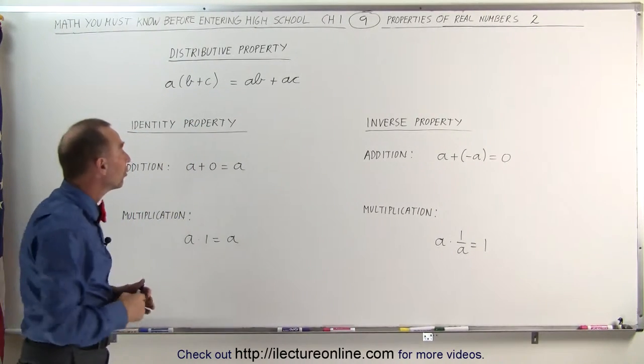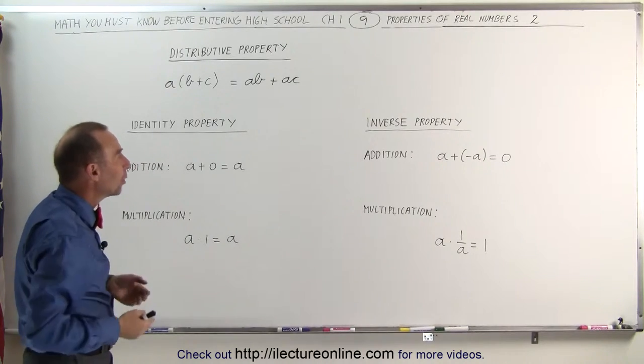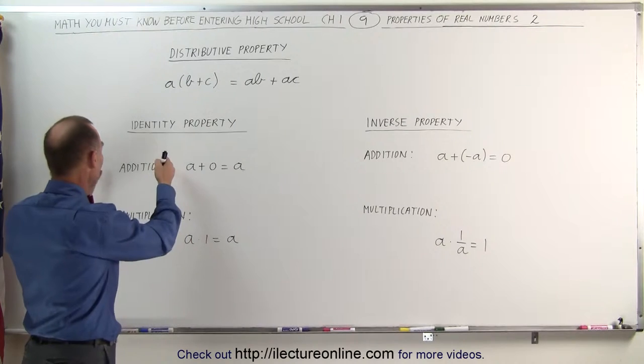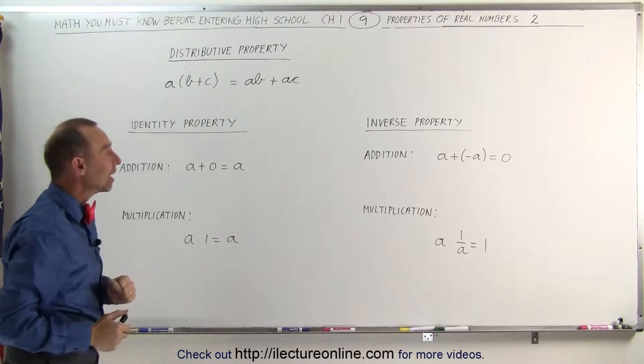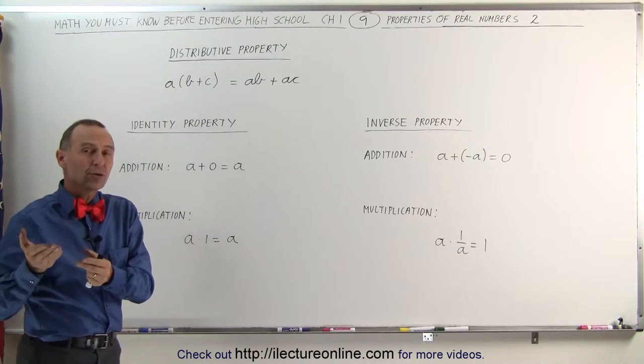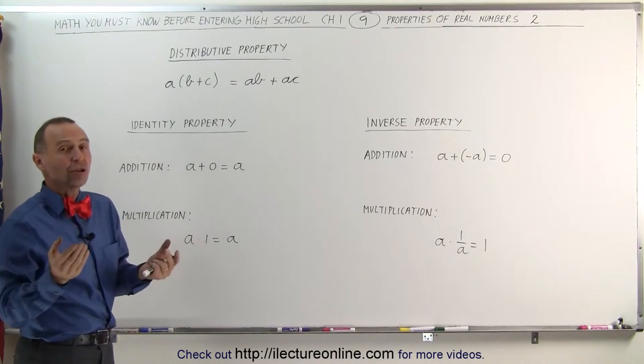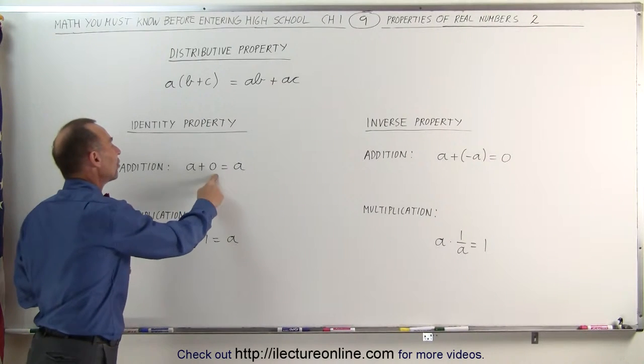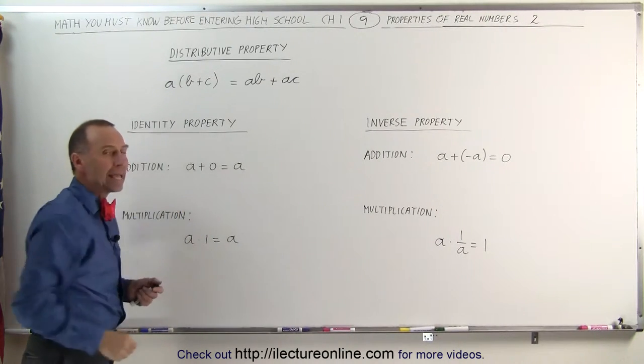Then we have a couple more properties: the identity property and the inverse property. We have one for addition and one for multiplication in each case. The identity property means that if we can add a number to an original number and not change it, that's called the identity property. In other words, we can add zero to a and still end up with a.